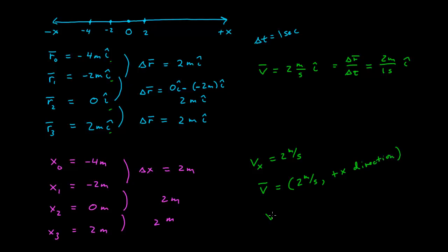But we do have to remember that the velocity is still a vector. Even in this notation, it has a magnitude of 2 meters per second and a direction in the positive x direction. I can rewrite this as: the v vector is equal to vx times i-hat. Since all we have in one dimension is the x component, I often only deal with the x component and just ignore the vectors completely.